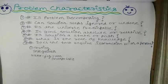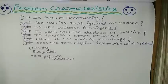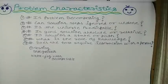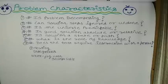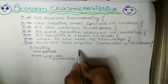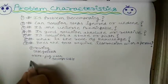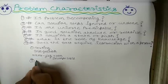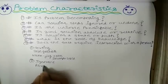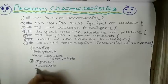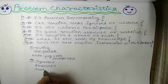Now, the second characteristic: can solution steps be ignored or undone? Can we do that, and in what cases? Can solution steps be ignored or undone if they prove unwise? For this second one, we have problems classified as: Ignorable, Recoverable, and Irrecoverable.